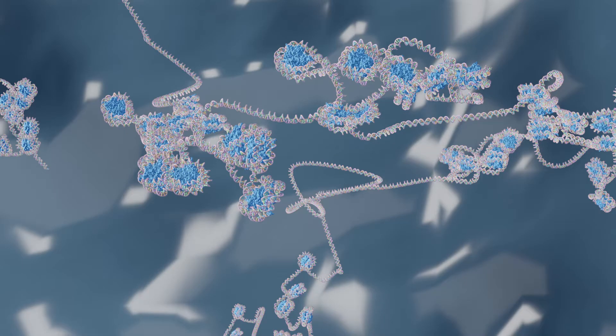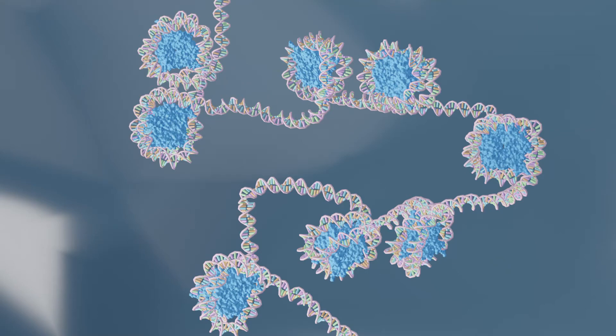Looking closer at one of these domains, there are nanodomains, which are nearby groups of nucleosome clutches. A nucleosome is made up of 8 histone proteins, which DNA wraps around roughly twice. With very little exposed DNA between each nucleosome, they form a nucleosome clutch.